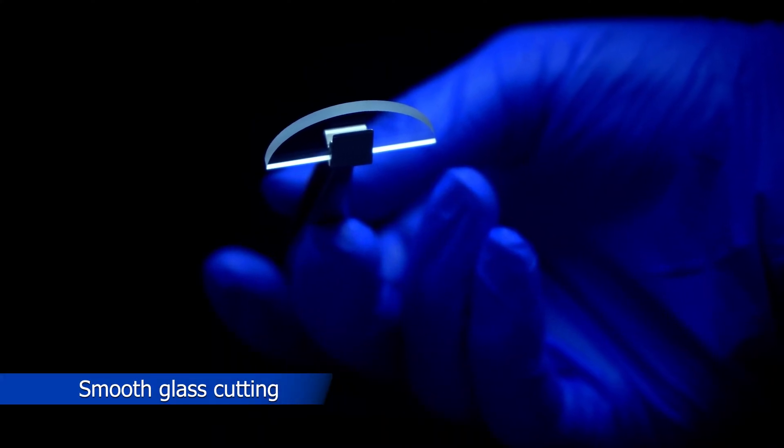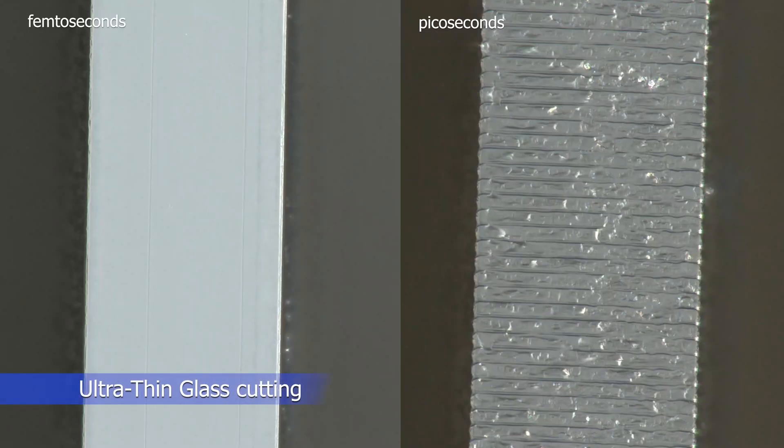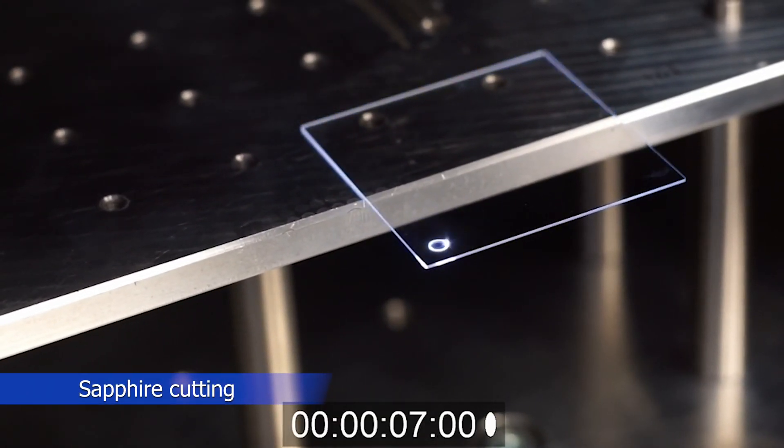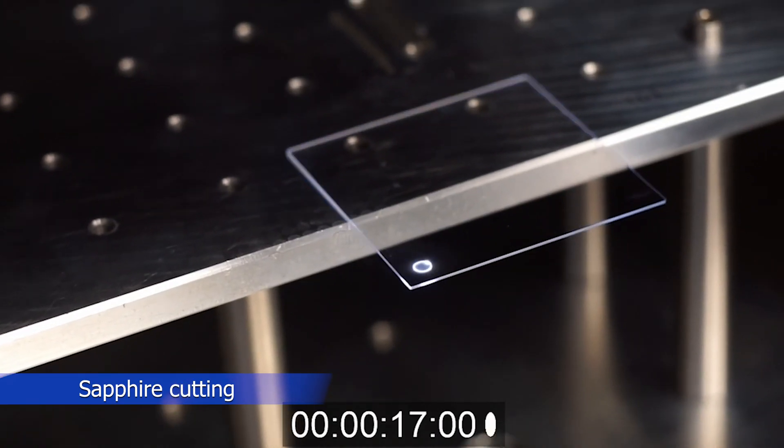Glass processing. Ultrafast lasers are a perfect tool for smooth glass processing, both thick and ultra-thin. Other transparent materials, like hard-to-machine sapphire, can be easily treated with femtosecond pulses cutting different shapes.